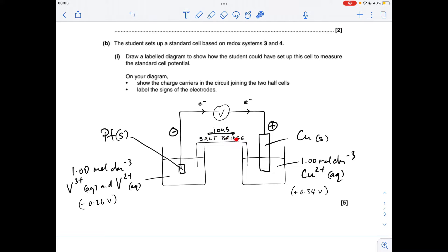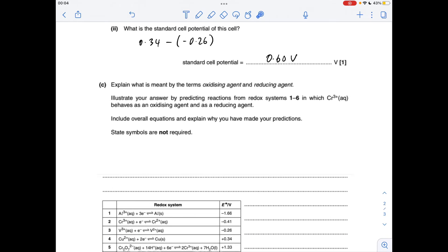The other charge carriers involved are the ions that are in the salt bridge. Typically that's a saturated solution of potassium nitrate, so you could put K+ ions and nitrate ions there, but just writing ions was absolutely fine. The cell potential is the most positive electrode potential minus the least, so that's 0.60 volts.